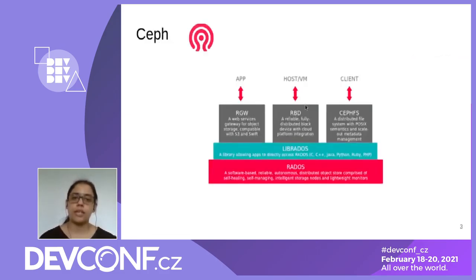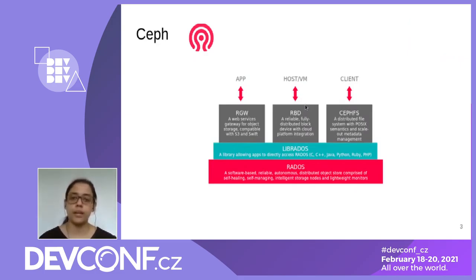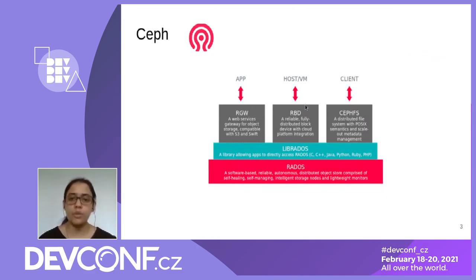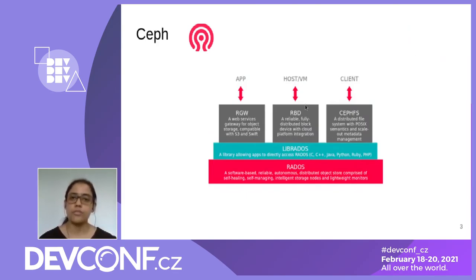So what is Ceph? Ceph is an open-source software-defined storage. It runs on commodity hardware with absolutely no vendor lock-in. It is distributed and highly scalable in nature. The architecture is designed such that there is no single point of failure. But since Ceph clusters are massive in nature with thousands of nodes, there is bound to be failure in the system, but the clusters are designed to be self-healing. It provides a unified interface for object, file, and block.